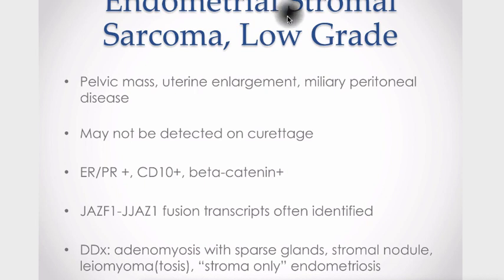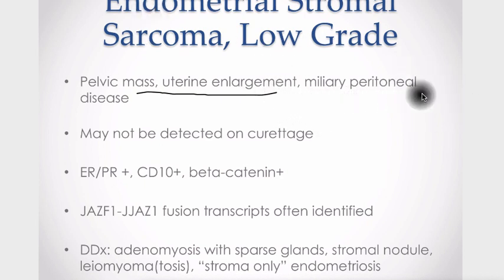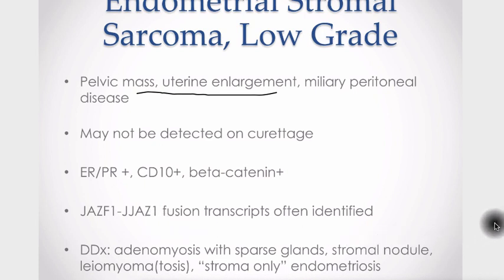The typical presentation is a pelvic mass with uterine enlargement, though we have seen a few cases presenting as a miliary peritoneal pattern of involvement. Curettage often will not detect this lesion because it doesn't have much, if any, endometrial surface involvement. The tumors are typically estrogen and progesterone receptor positive, CD10 positive, and beta-catenin positive — all things less likely to be found in leiomyosarcoma. A majority of cases also have a unique fusion transcript, the JAZF1-JJAZ1 fusion.